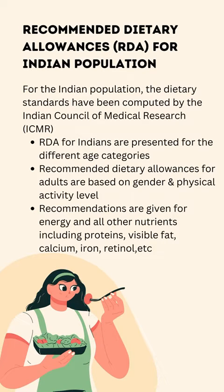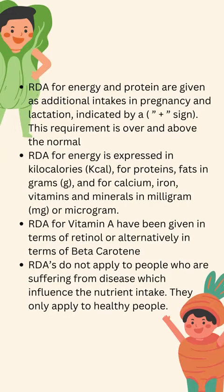Recommendations are given for energy and all other nutrients including proteins, visible fat, calcium, iron, retinol, etc. RDA for energy and protein are given as additional intakes in pregnancy and lactation, indicated by a plus sign — this requirement is over and above the normal RDA. Energy is expressed in kilocalories (kcal), proteins and fats in grams (g).